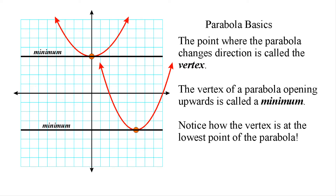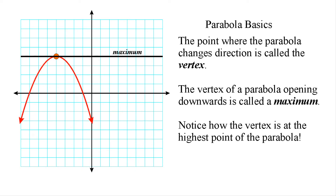Now, what we should notice about a vertex of a parabola that is opened upwards is that that is the lowest point of that parabola. Therefore, we call it a minimum. And the vertex of a parabola that is opened downwards is called a maximum.